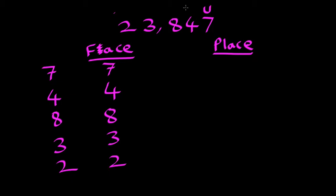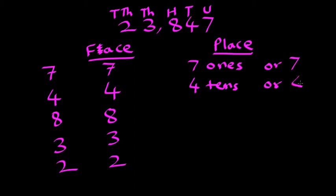This is units, 10s, 100s, 1000s and now you have 10,000s. So this is going to be 7 ones or 7. For 10s or 40. Again 8, 100s or 800.